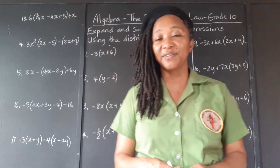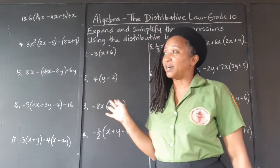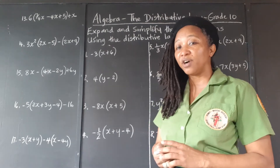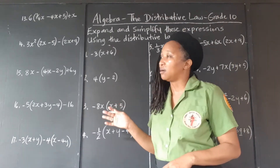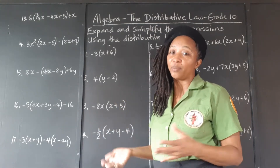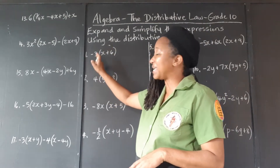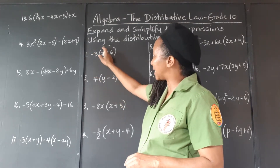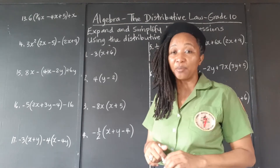The Distributive Law states that when you are given an expression or an equation which involves brackets, the number or the letter — whether it's a number, a variable, or a combination — the term that is immediately in front of the bracket is distributed among the terms inside the bracket.